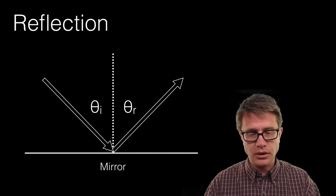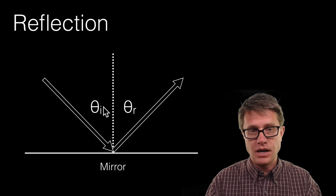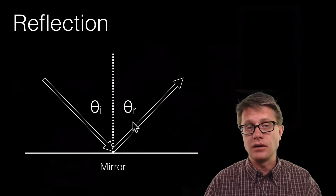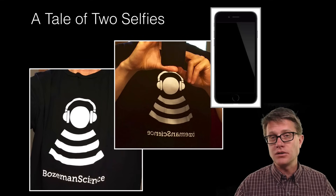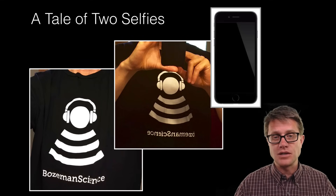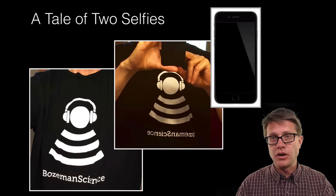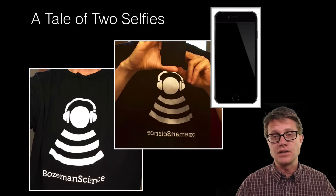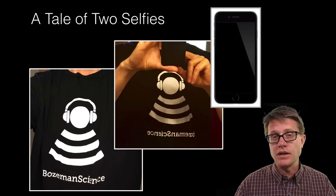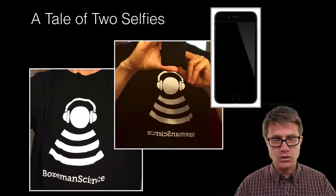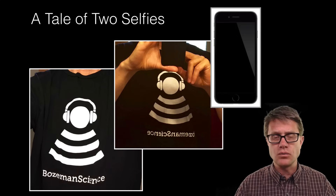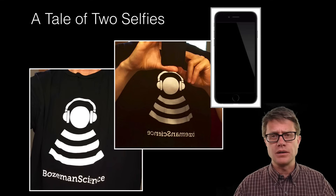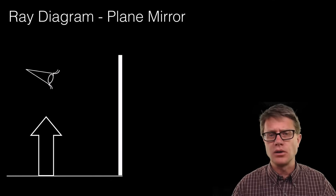Reflection is light bouncing off a surface, and our only rule is that the angle of incidence — the angle between the normal and the way the ray comes in — is equal to the angle of reflection. I took a picture of myself wearing a Bozeman Science shirt using both the front-facing and rear-facing camera on my phone. In the rear-facing camera I stood up to a mirror. Can you figure out which image was taken using a mirror and which was not? Let us get to why they look a little bit different.